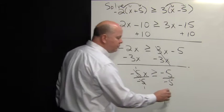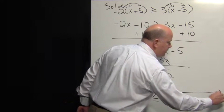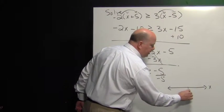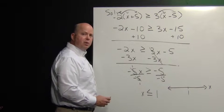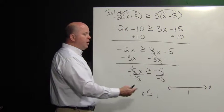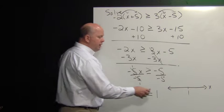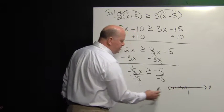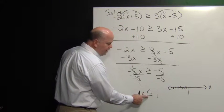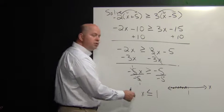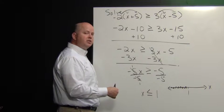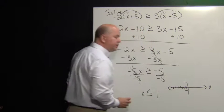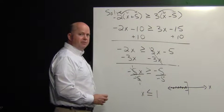If we want to graph that solution set, we would label this X. The number we're really concerned with is one. We want less than one, so it's going to be to the left of this value. Because we have less than or equal to, equal to means that one is a potential solution. Therefore, we have to include it with a square bracket on our graph.